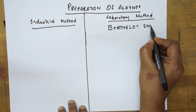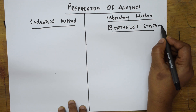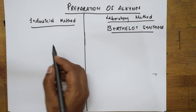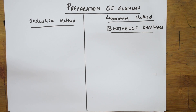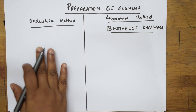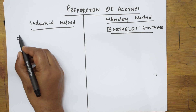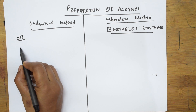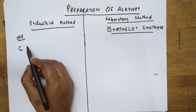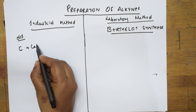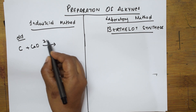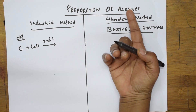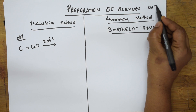Berthelot synthesis was given by Marcellin Berthelot, a French chemist. Now when speaking about the industrial method of preparation, we have two ways: an old method and a modern method. In the old method of industrial preparation, coke or carbon is taken and calcium oxide is added. This mixture is heated at 2000 degrees centigrade. The basic alkyne we are preparing is acetylene.